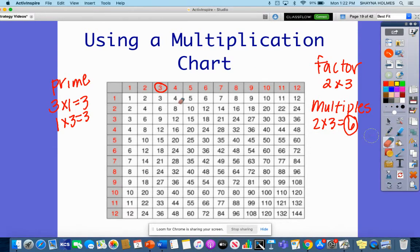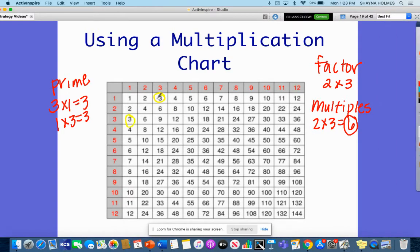When I go down here and I look at three, I find three here and here. I look up and I've got three and one. It's prime because that's itself and one.